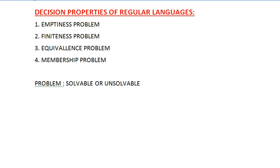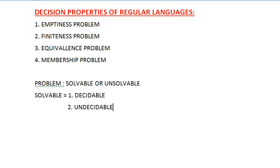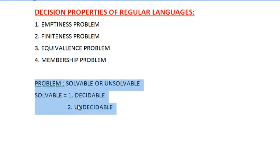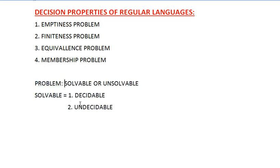Solvable problems can be divided into two parts: one is decidable — meaning an algorithm exists — and the other is undecidable, meaning no algorithm exists. So decidable means an algorithm exists; undecidable means it does not. This topic will be covered properly in unit number five. This is just the basic problem definition.